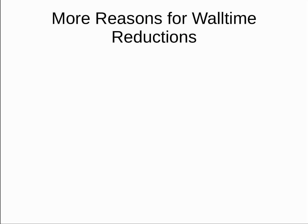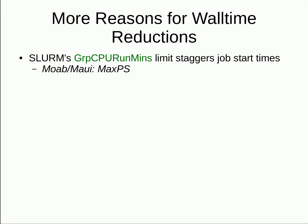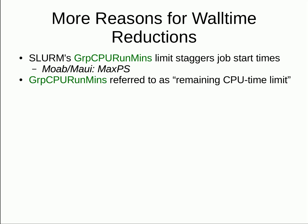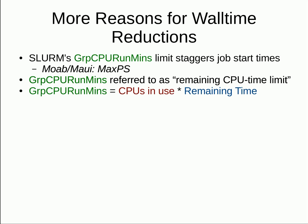This does apply for BYU. BYU uses SLURM's GRPCPU RunMins limit to stagger job start times. Note that this is similar to Moab and MAUI's MaxPS value. This GRPCPU RunMins setting can be referred to as a remaining CPU time limit, meaning it is the CPUs in use times the remaining time of those jobs. Let's say there is a per-user limit of three CPU days. If a user submits three-day jobs, only one will be able to run at a time. If the user instead submits multiple one-day jobs, three can run immediately. After the three jobs run for eight hours, another one-day job can start, since the original three jobs only have two CPU days left — that's 24 hours minus 8 equals 16, so 16 hours times 3 equals 48 hours, that's two days. Thus, one CPU day is now available.